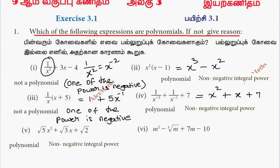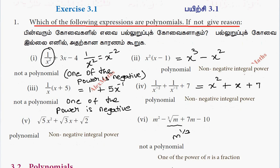The last is the division. This is m to the power 1 by 3. This is not a polynomial. The reason is one of the powers of m is a fraction — 1 by 3.